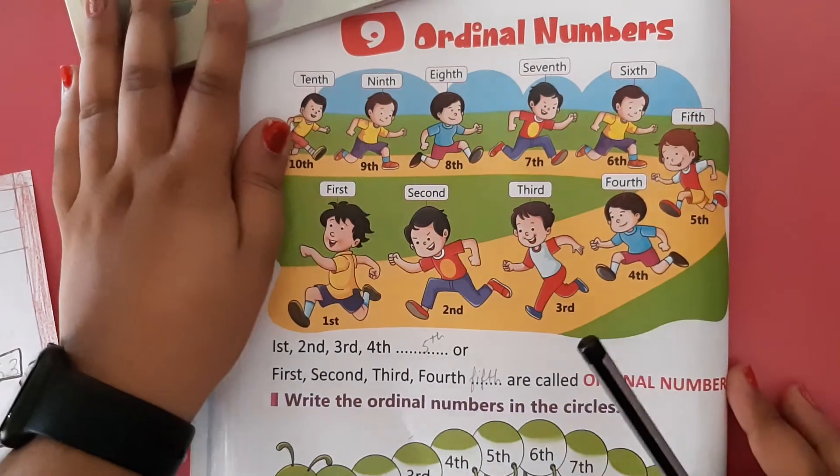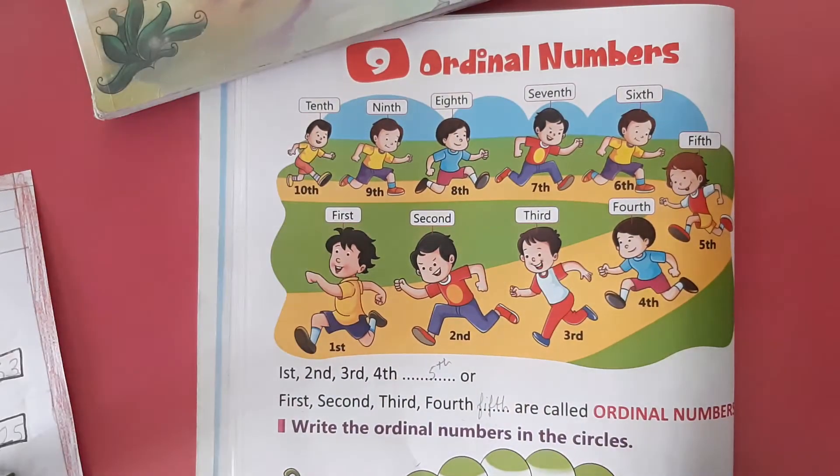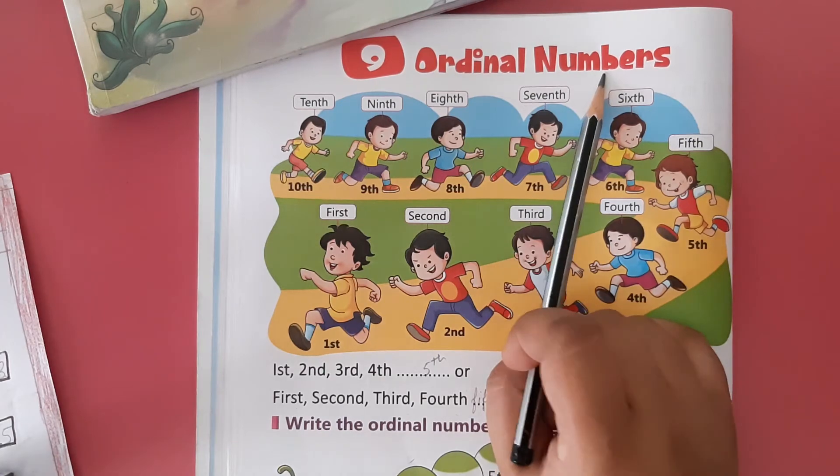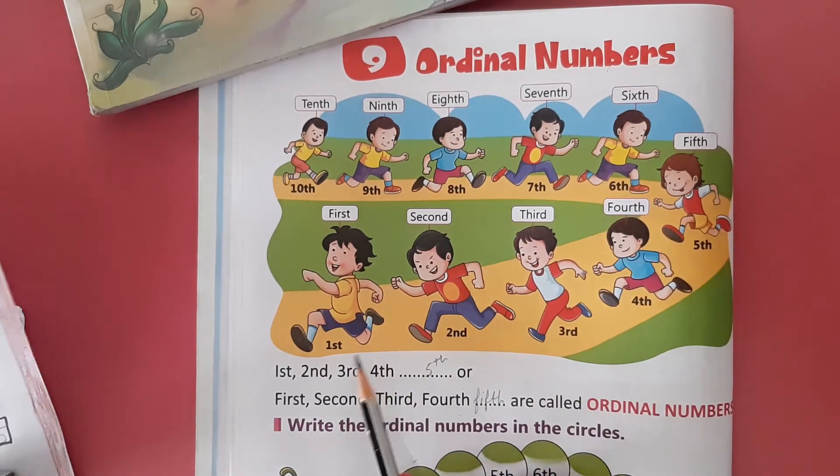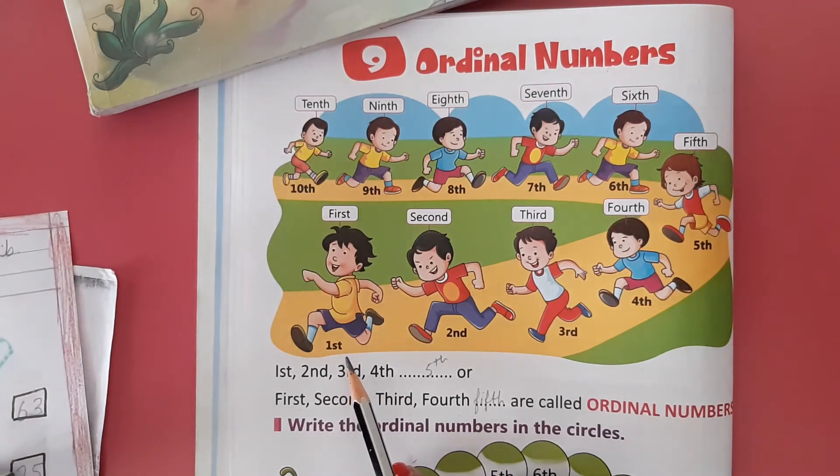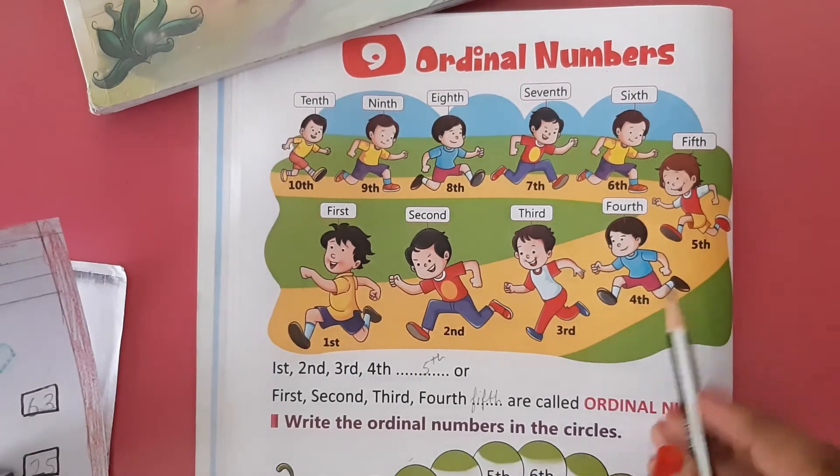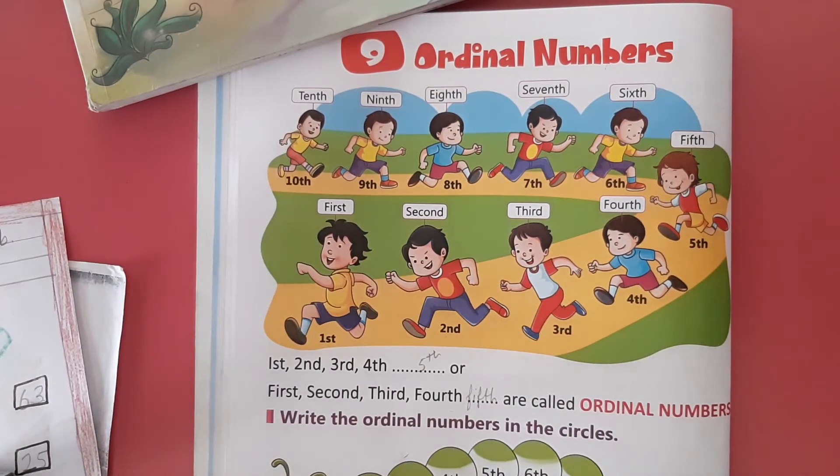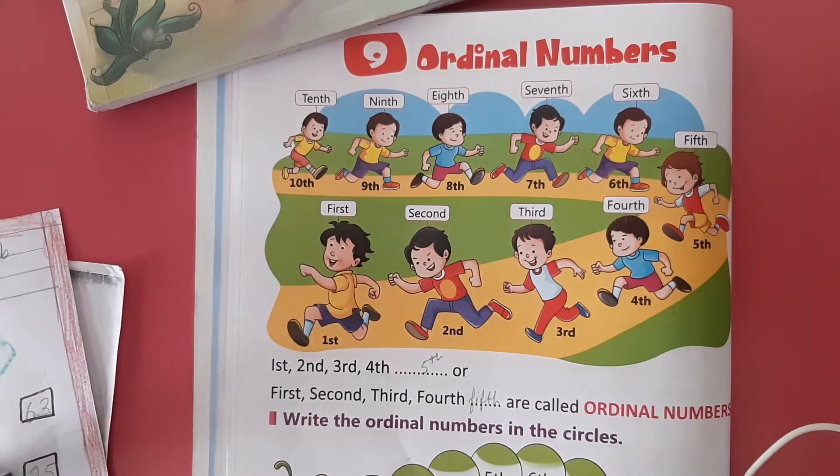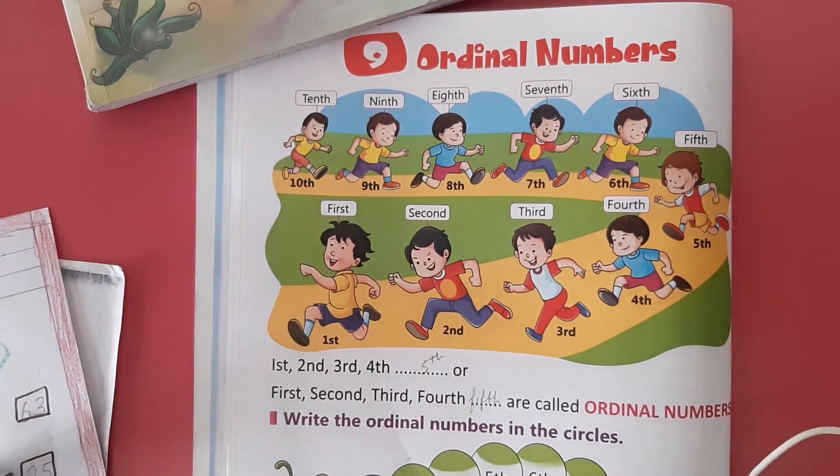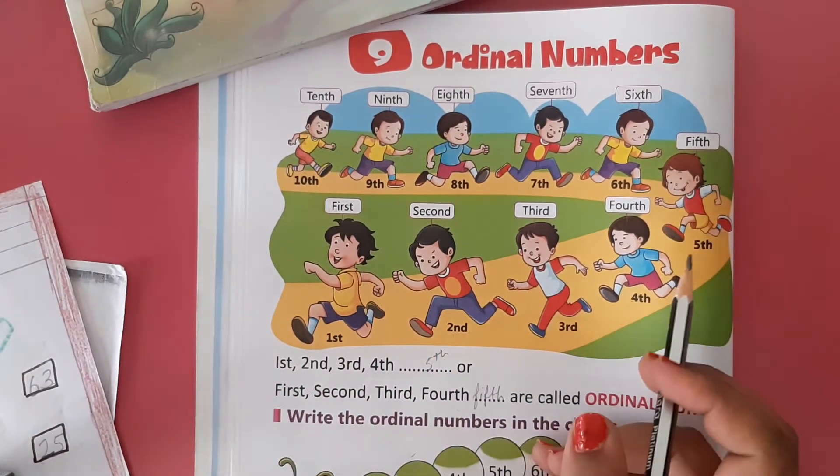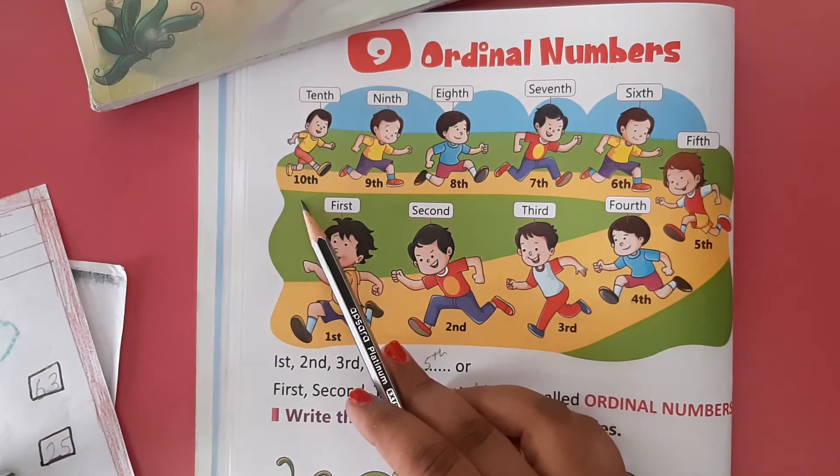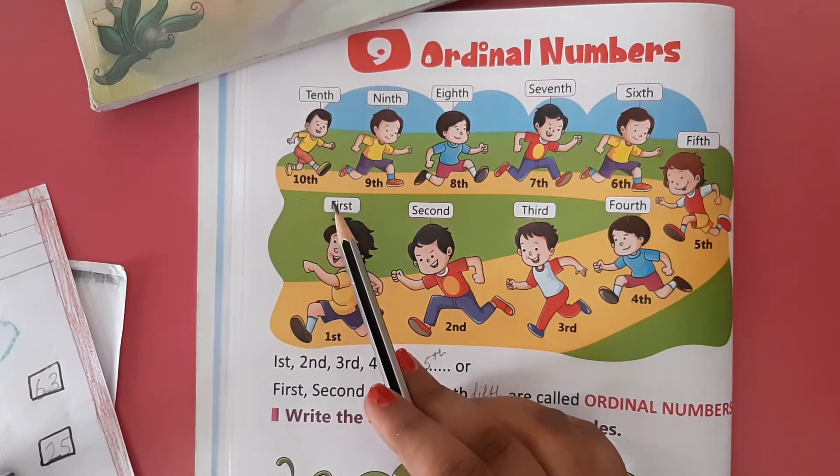The topic is ordinal numbers. Here, see what ordinal numbers are: first, second, third, fourth, fifth, sixth, seventh, eighth, ninth, tenth. These are called ordinal numbers.